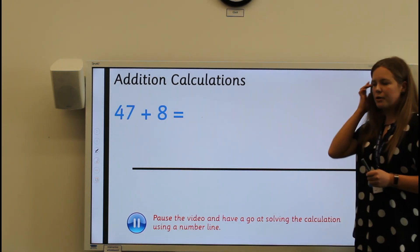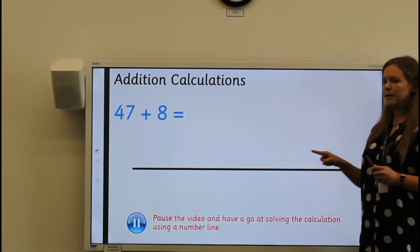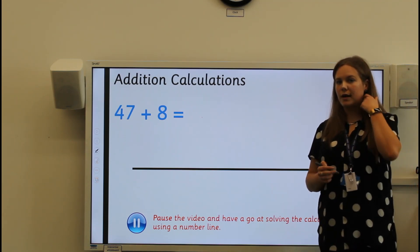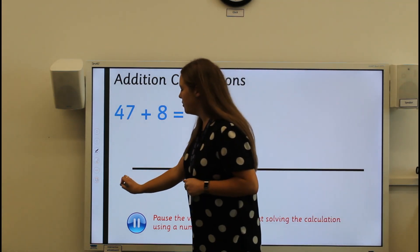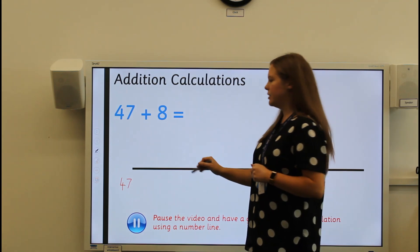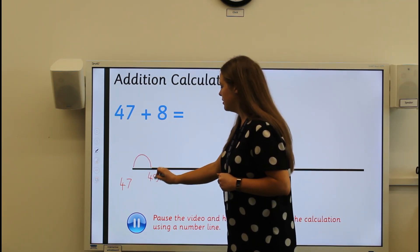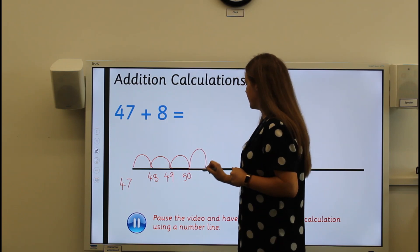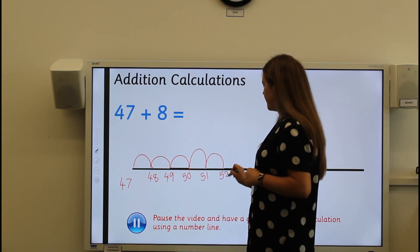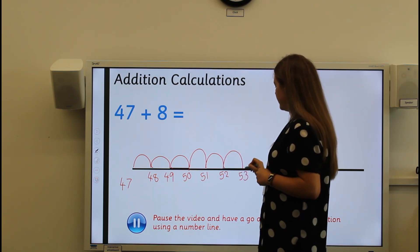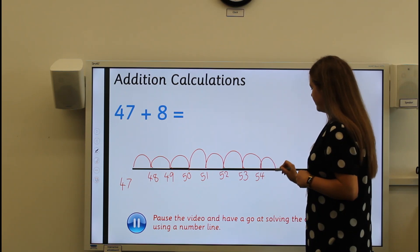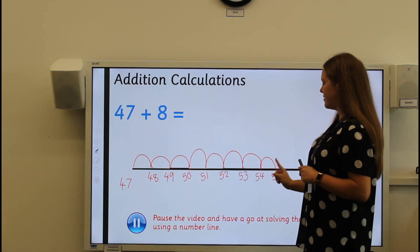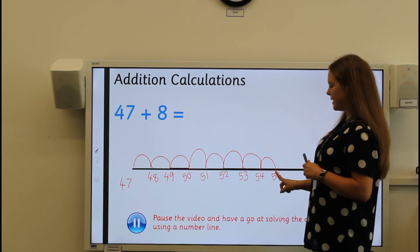Here's another one for you to have a go at home. Pause the video, draw yourself a blank number line and work out forty-seven plus eight. Well done, let's check the answer. We write forty-seven on the left-hand side and make eight jumps of one: one, two, three, four, five, six, seven, eight. Let's check we've got eight jumps: one, two, three, four, five, six, seven, eight. Brilliant. So forty-seven add eight equals fifty-five.